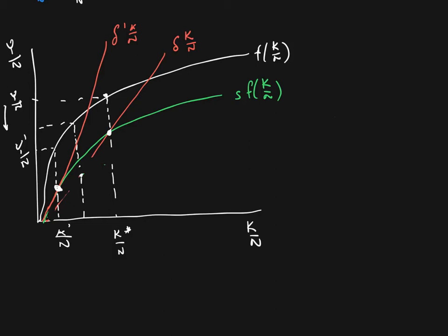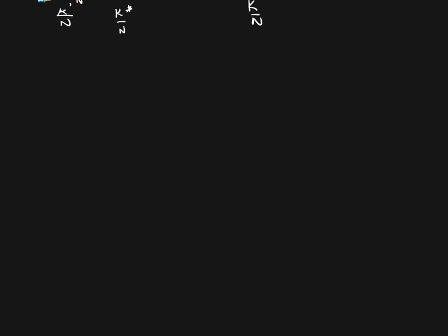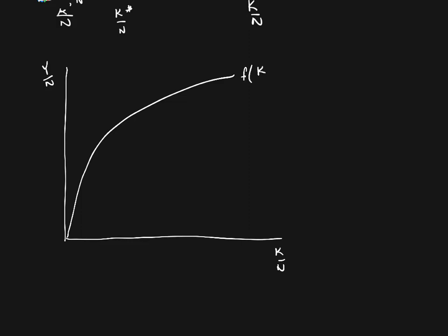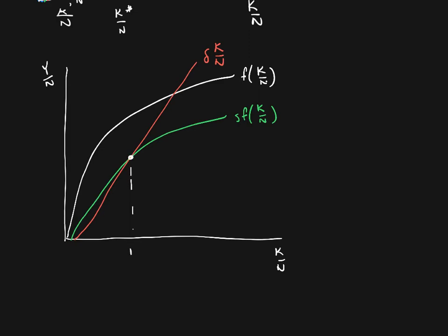The last thing I want to look at is what happens when we have an increase in technology. So far we've looked at increases and decreases in the saving rate and changes in the rate of depreciation. Now let's see what happens with technological progress. Starting again with capital per worker on the horizontal and output per worker on the vertical, here is our production function, the saving function S times F of K over N, and the depreciation rate delta K over N. Our steady state is K over N star with associated output Y over N star.